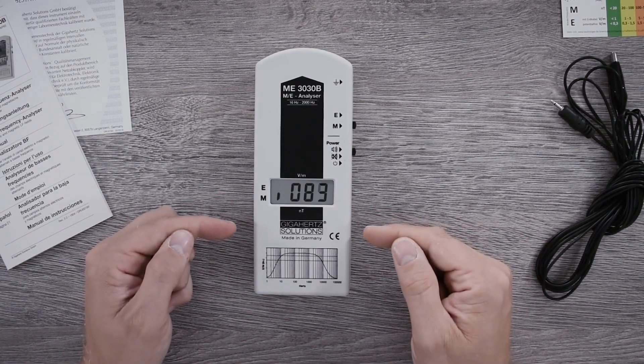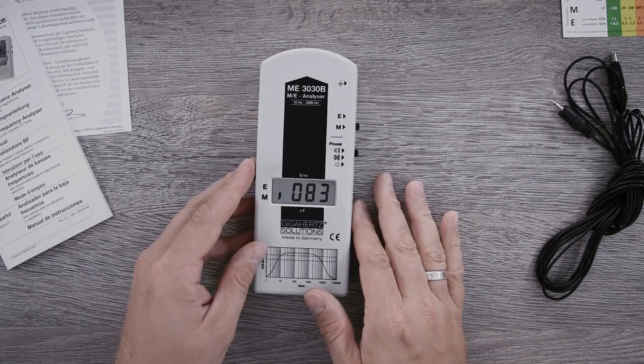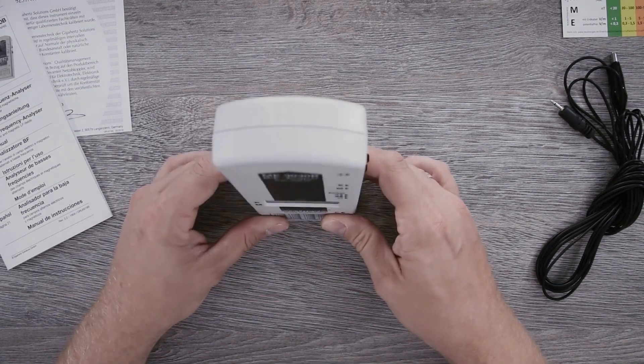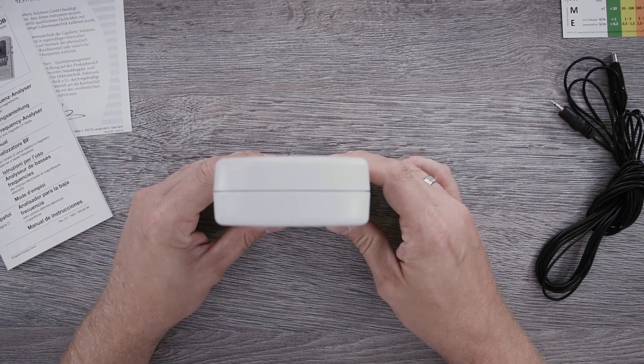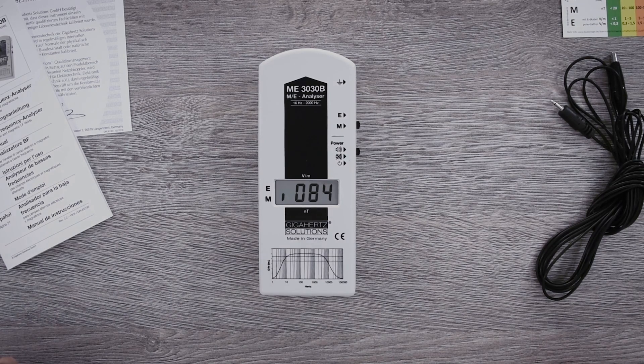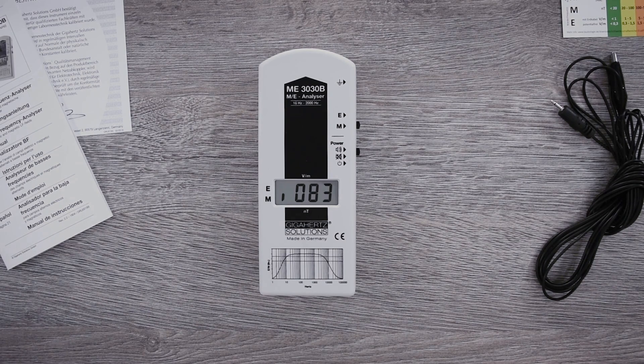That means once I measure in this position, write down the value. Switch into this position, memorize the value. And measure in this position as well, again noting the value. All three values are quartered, added together, and from that the square root is taken. This gives you the three-dimensional value that is in effect on you at the moment.